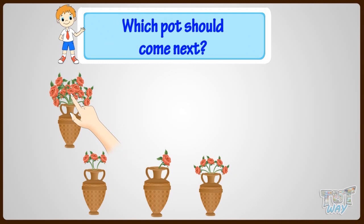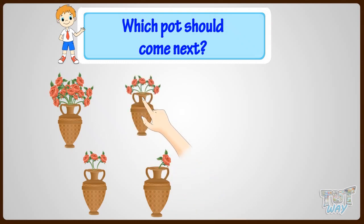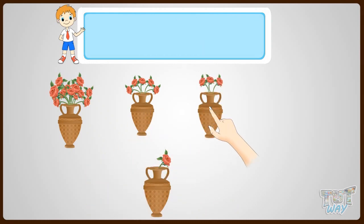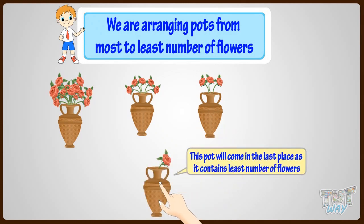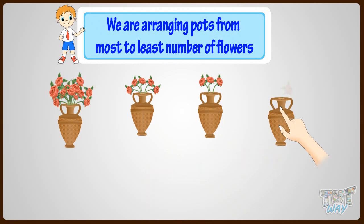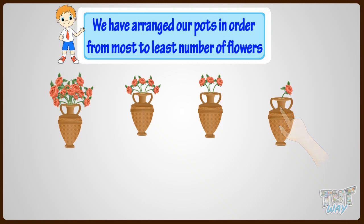Which pot should come next? Yeah, this one! As we are arranging pots from the most to the least flowers. And this pot will come last as it contains the least flowers. We are done! We have arranged our pots in order from most to least flowers.